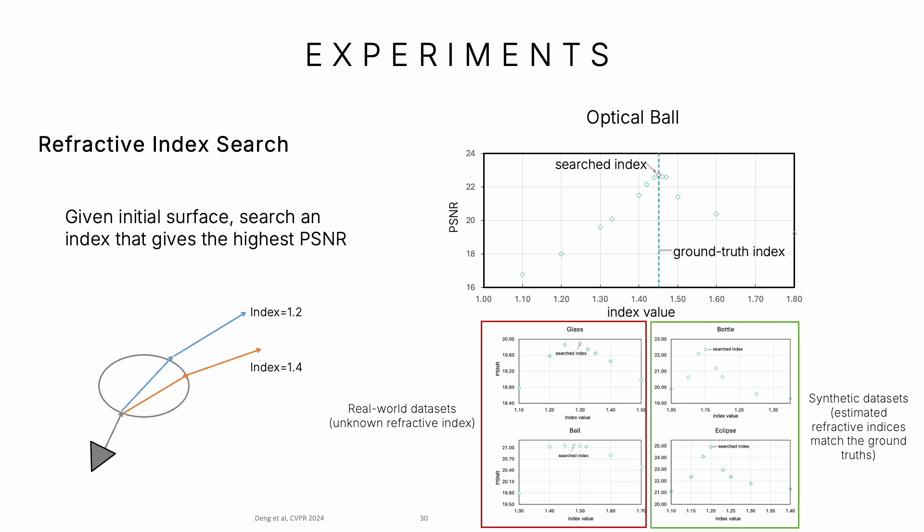On other datasets, we have the same observations. Particularly, for real-world datasets where refractive indices are unknown, we use our searching technique to find an index.